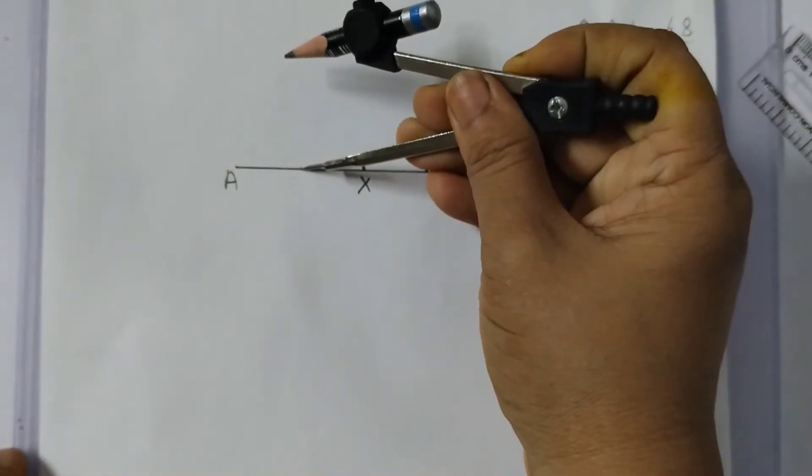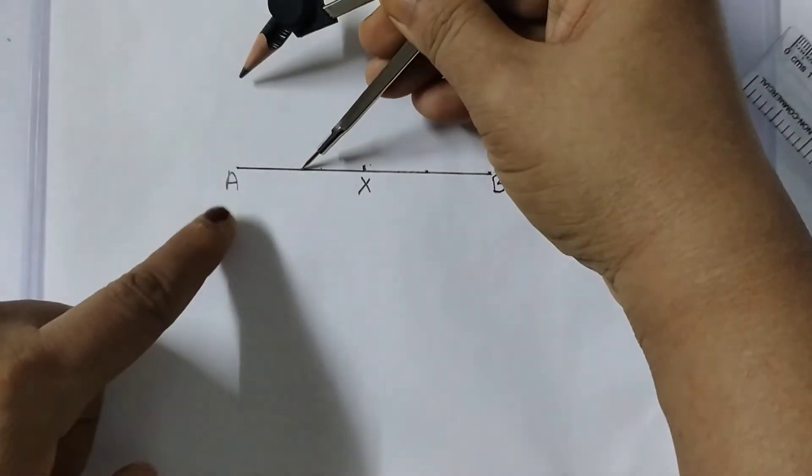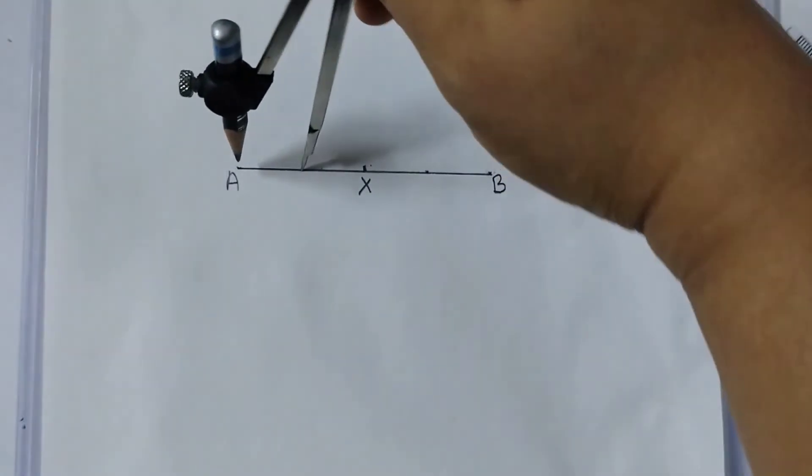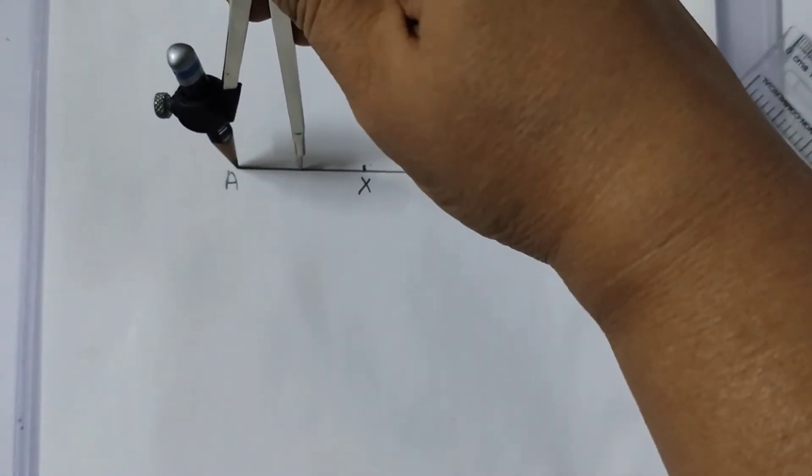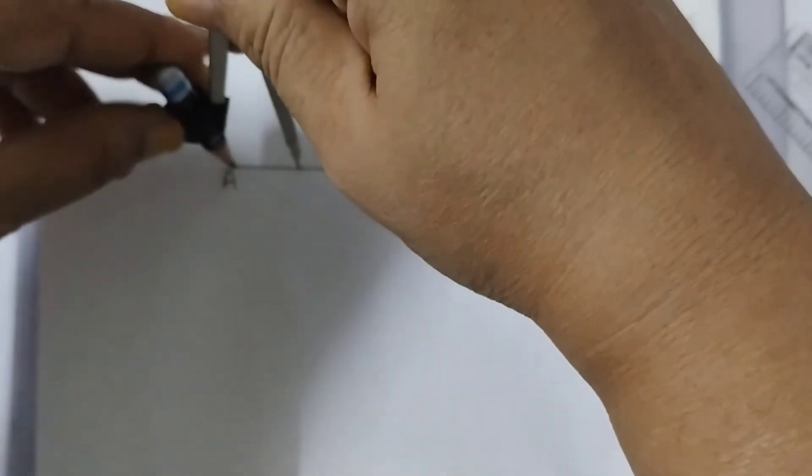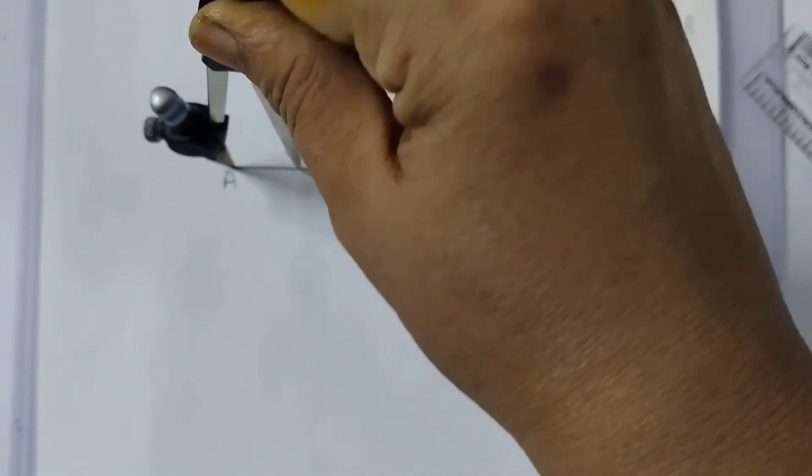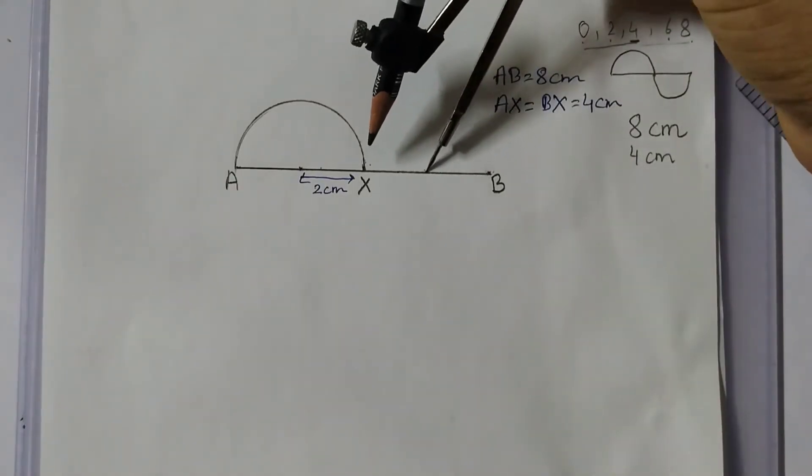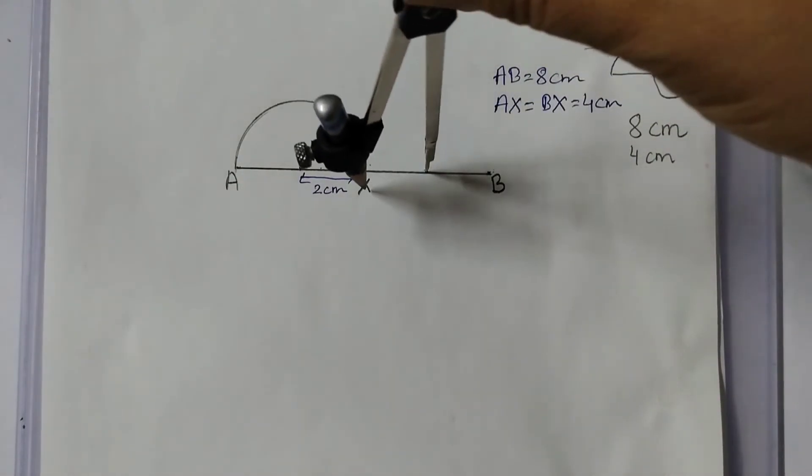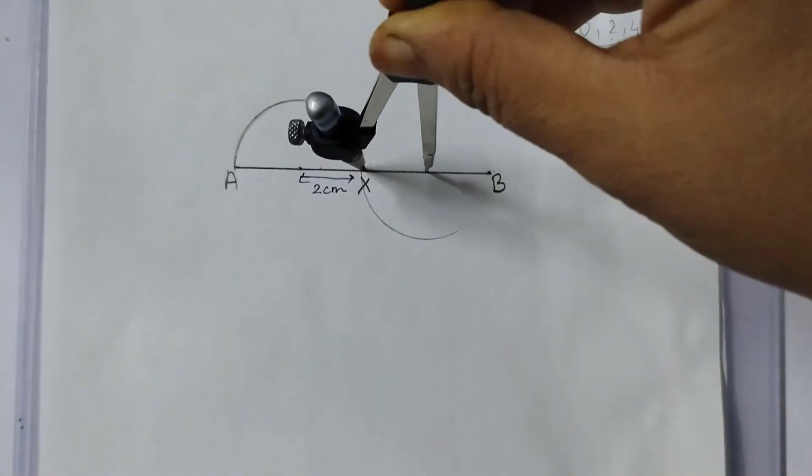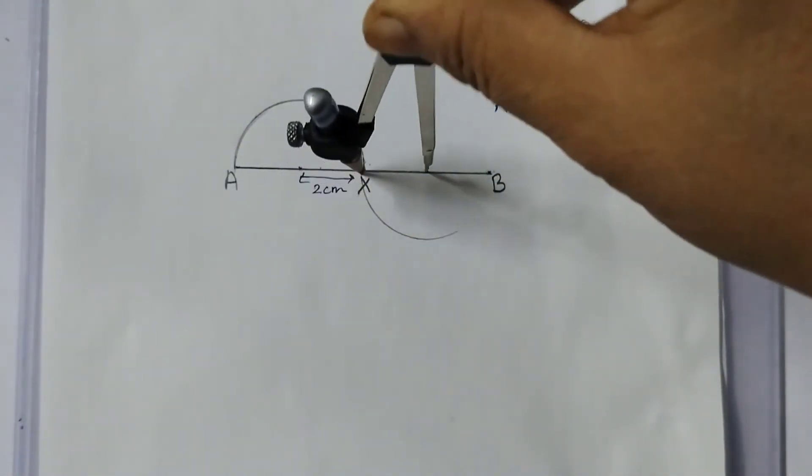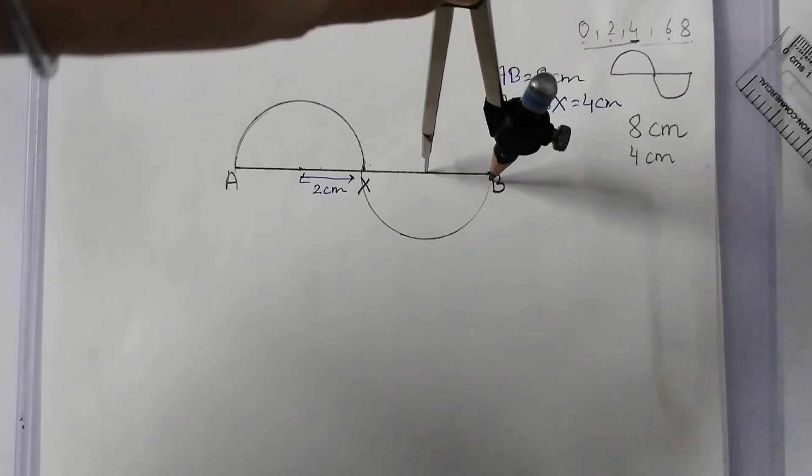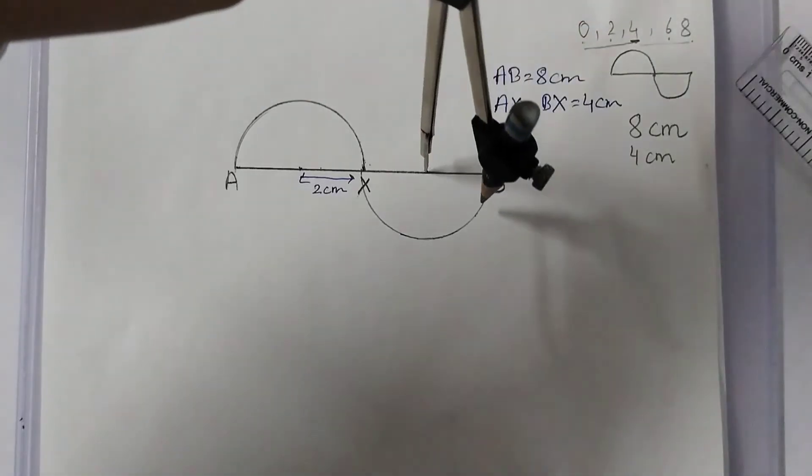So keep your metal point here, pencil point you keep here and take the measurement. Like this, you take the measurement and draw a semicircle. So when I do that, see what do I get. Now it's the same measurement, keep the metal point here, this point here, and draw a semicircle on the lower side like this. And do you see here, it touches the point B.